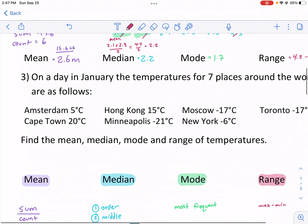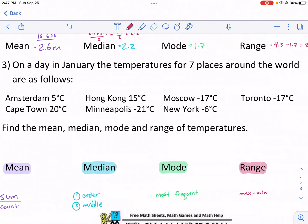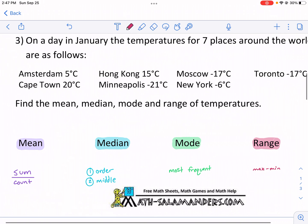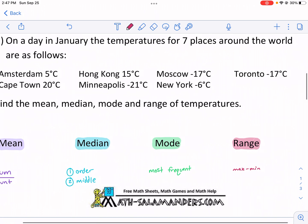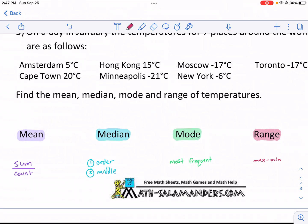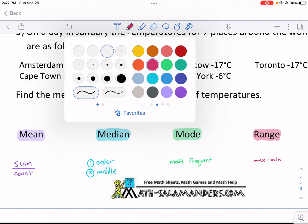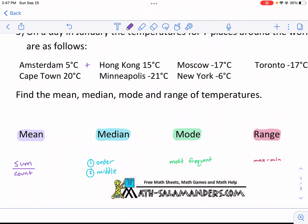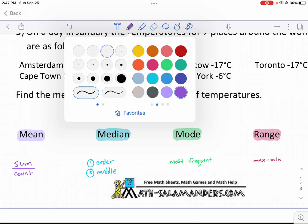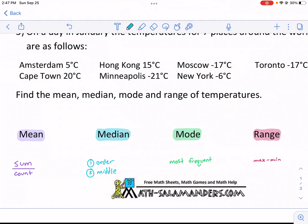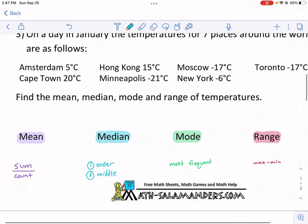We have one last question. On a day in January, the temperatures for seven places around the world are as follows. Find the mean, median, mode, and range of the temperatures. You guys know the drill. First thing, I'm going to do the median. The reason why is I want to put them in order. I want to put them in order right away. I always think that's a good strategy.